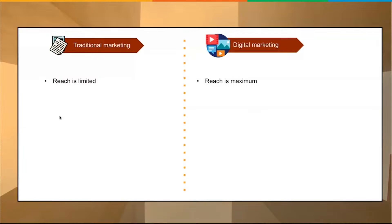Traditional marketing reaches a limited audience while digital marketing reaches a maximum audience. When you print something, you're printing it for a set number of people. If you're promoting an event and you create a thousand flyers, you're reaching maybe a thousand people — perhaps two thousand if they share it. With digital marketing, we can promote an event to a whole lot more people depending on the platform.